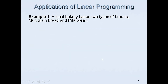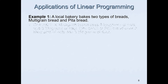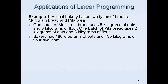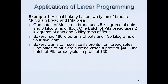Now we'll look at the first example. A local bakery bakes two types of bread: multi-grain bread and pita bread. One batch of multi-grain bread uses 5 kilograms of oats and 3 kilograms of flour, and one batch of pita bread uses 2 kilograms of oats and 3 kilograms of flour. The bakery has 180 kg of oats and 135 kilograms of flour available. The bakery wants to maximize its profit — one batch of multi-grain bread yields a profit of $40 and one batch of pita bread yields a profit of $30.